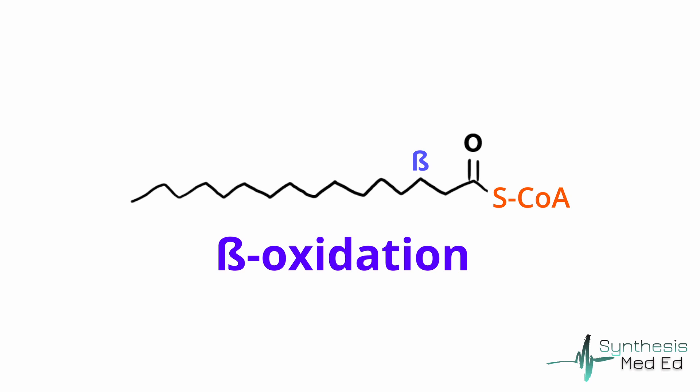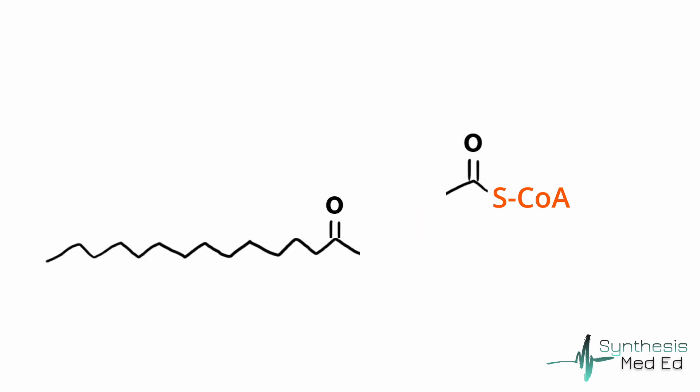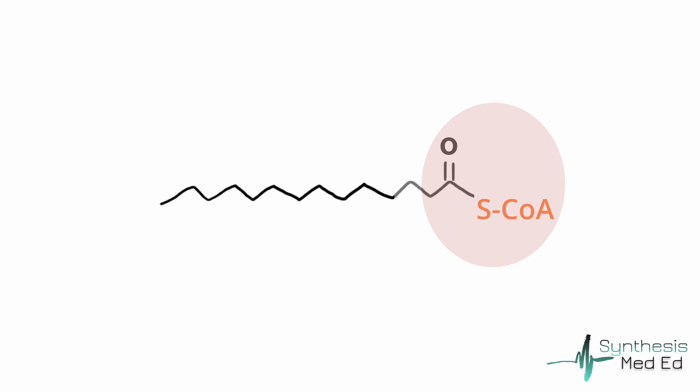With the beta carbon now oxidized into a carbonyl group, we can now break this bond, which releases a 2-carbon acetyl-CoA molecule. And this acetyl-CoA can now be used as fuel and be fed directly into the TCA cycle for energy. Another CoA molecule comes in to cap the end of this molecule and keep it reactive, and we can continue stripping off 2-carbon acetyl-CoA's every turn of beta-oxidation until this molecule is completely broken down.